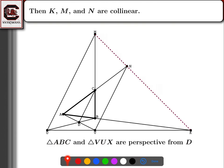I claim they're perspective from the point D. Let's check: the line through the first vertices A and V goes through D. The line through B and U goes through D. And the line through C and X — X was the point at infinity where all the parallel lines meet, so the line CD also goes through X. So yes, the line through C and X goes through D. We do have perspective from D, and since they're perspective from a point, they have to be perspective from a line — meaning M, N, and K are collinear.